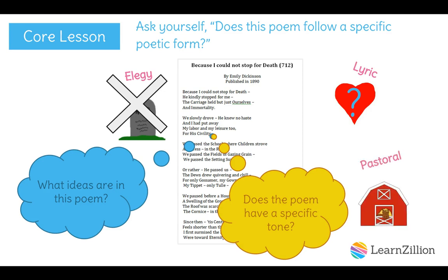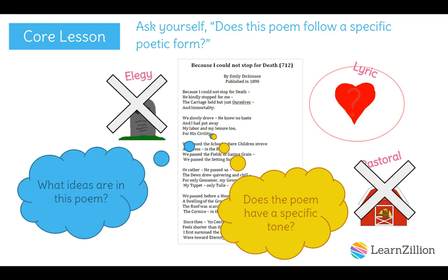Let's check one more form. Pastoral poems idealize nature and country life, with an idealistic tone. Our poem does contain some references to nature — the grain, the sun, the dew — but it's not about nature, and the tone is not idealistic. It's not making death sound too good to be true. So our poem is not a pastoral poem. We've confirmed it: our poem is a lyrical poem.